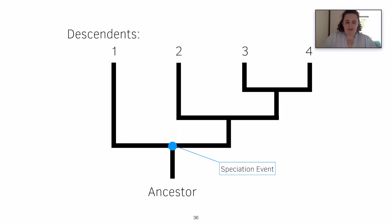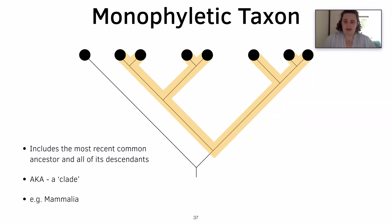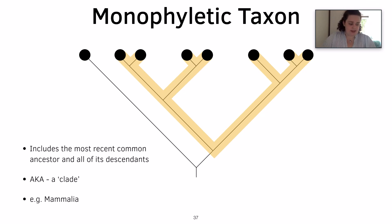When a branch splits, it's known as a speciation event. There are numerous different types of trees — one of which is a monophyletic taxon. This includes the most recent common ancestor and all of its descendants, and is also known as a clade.